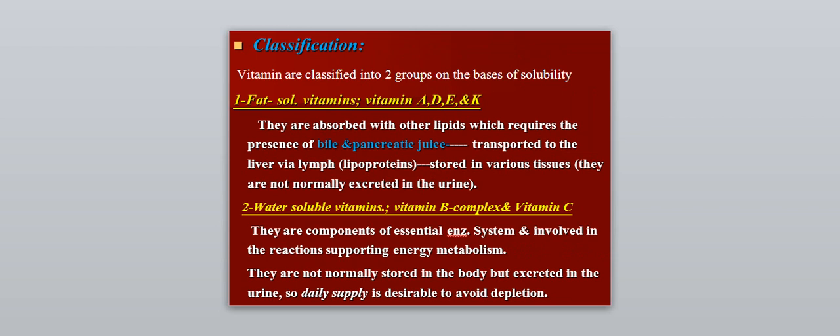Vitamins are classified into two groups on the basis of solubility: fat-soluble vitamins and water-soluble vitamins. Fat-soluble vitamins include A, D, E, and K. They are absorbed with other lipids, which requires the presence of bile plus pancreatic juice. After absorption, they are transported to the liver by the lymphatics as lipoproteins and stored in various tissues. They are not normally excreted in the urine.